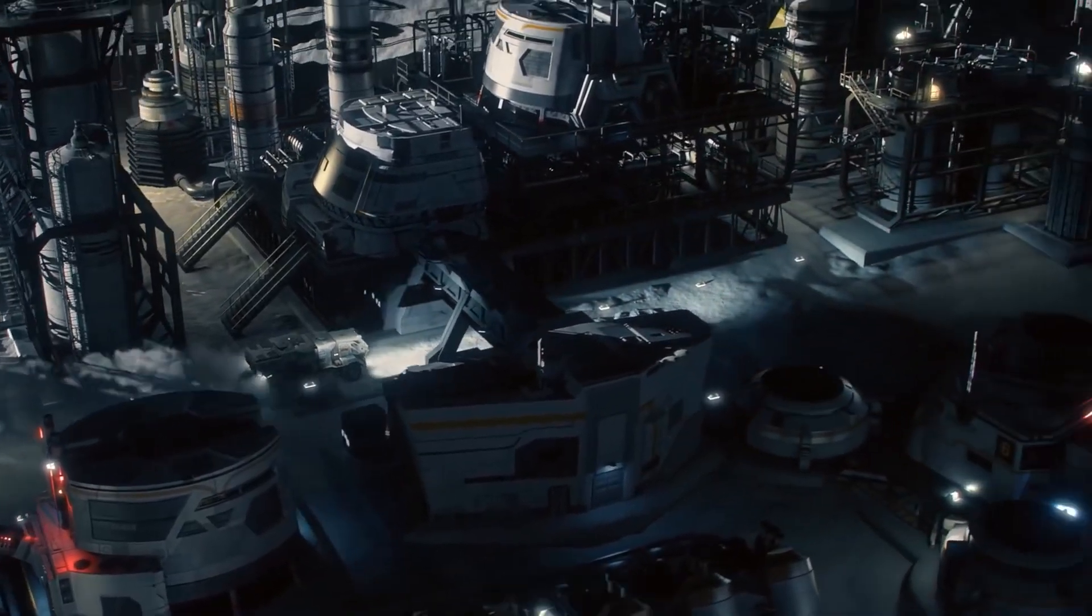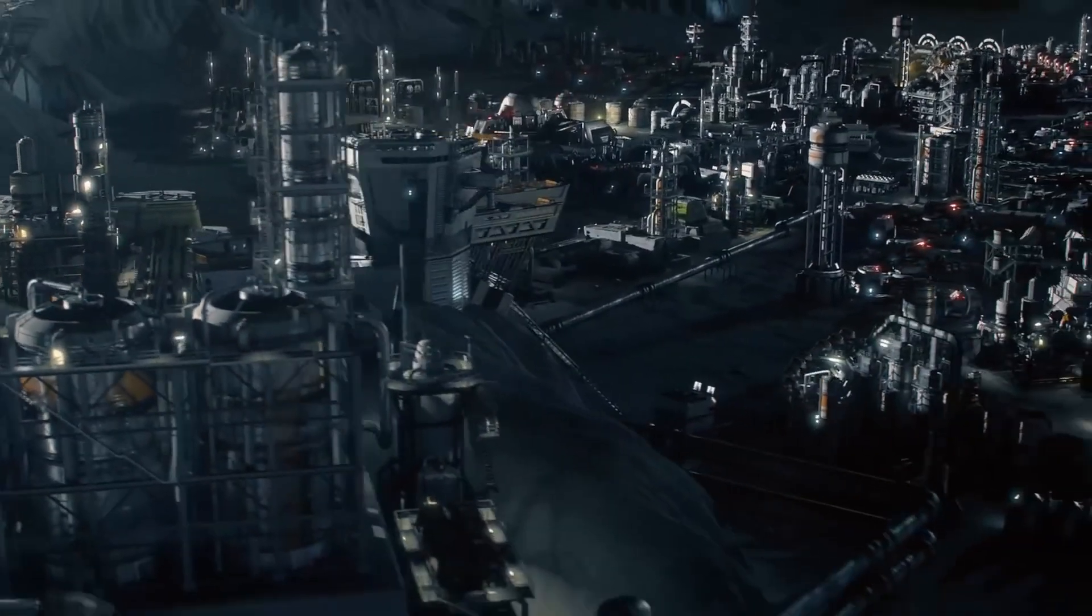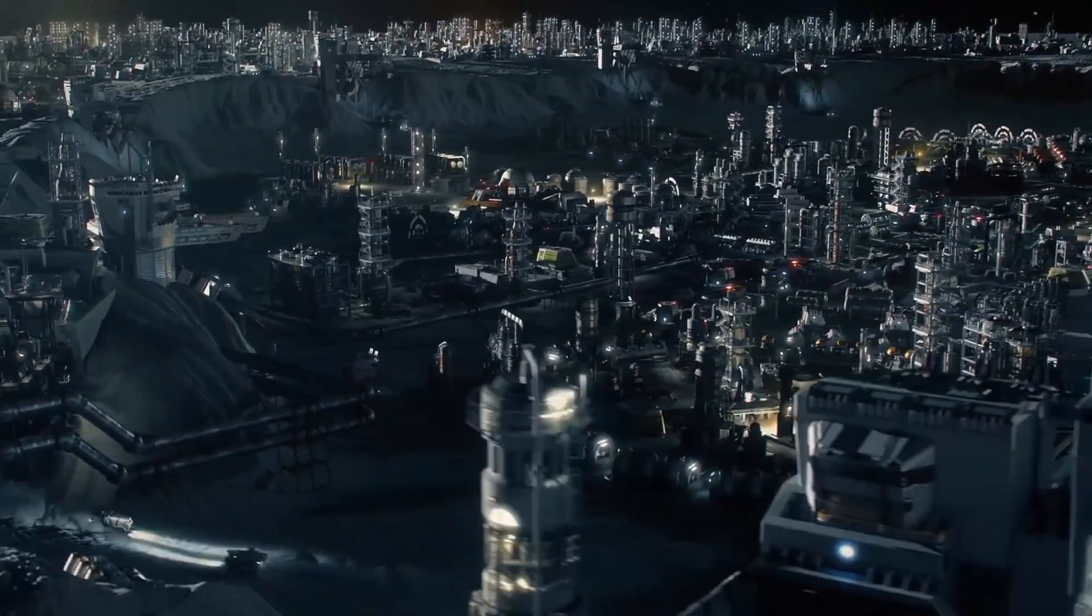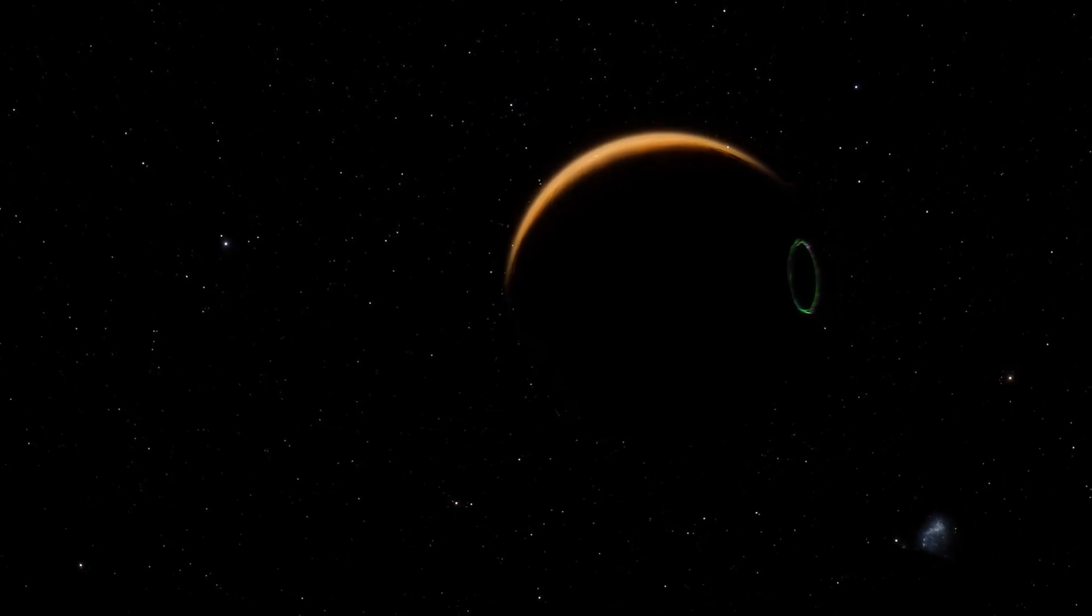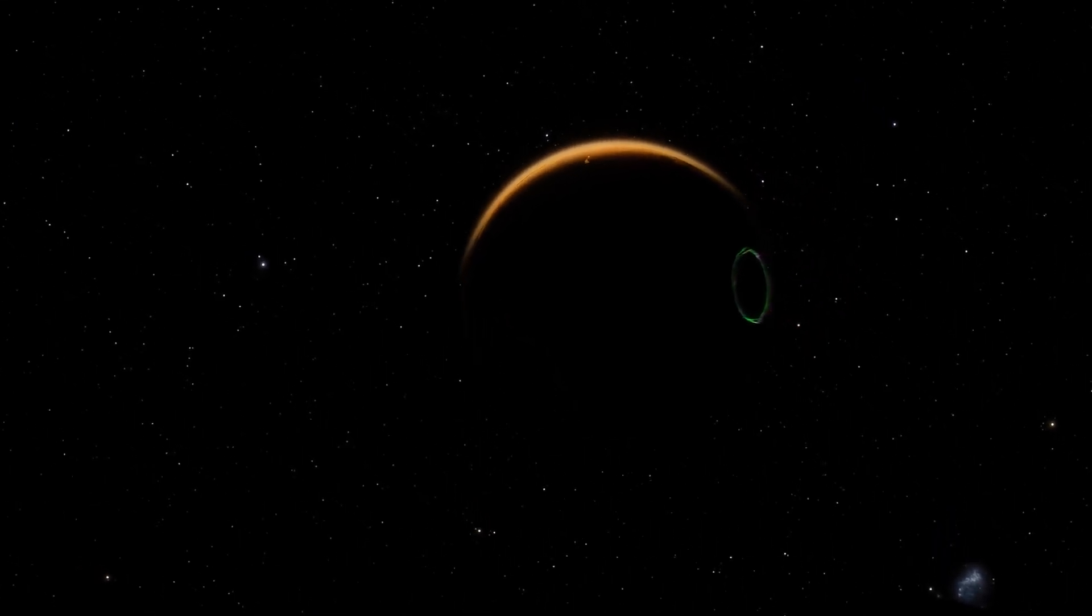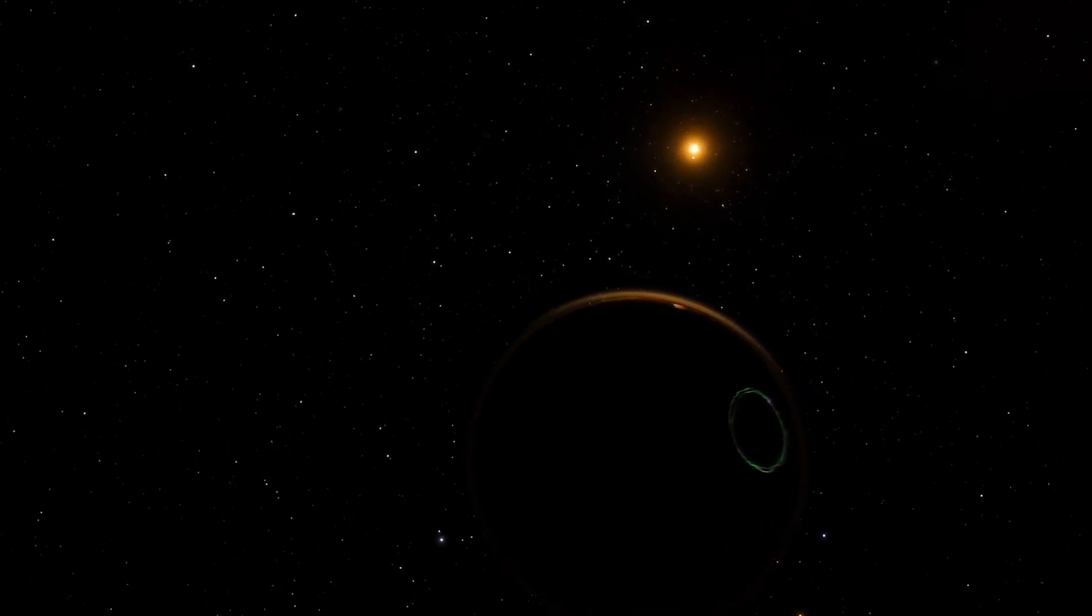By focusing on Proxima Centauri b, the closest exoplanet to Earth, the telescope revealed the presence of unusual bright lights emanating from its surface. What could be the cause of these unusual lights on Proxima Centauri b? Could they indicate the existence of life beyond our own planet?